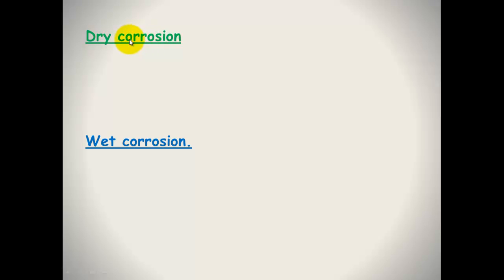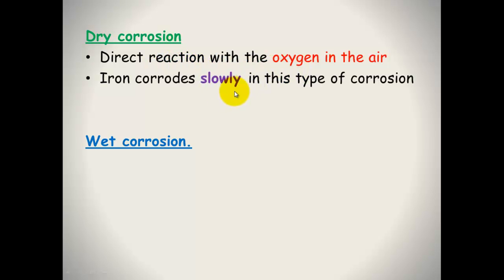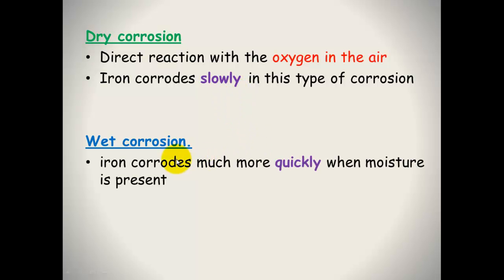There are two forms of corrosion, dry corrosion and wet corrosion. Dry corrosion is direct reaction with the oxygen in the air, and this is a slower process than wet corrosion. In wet corrosion happens a lot more quickly.